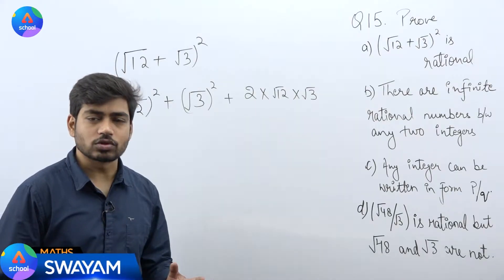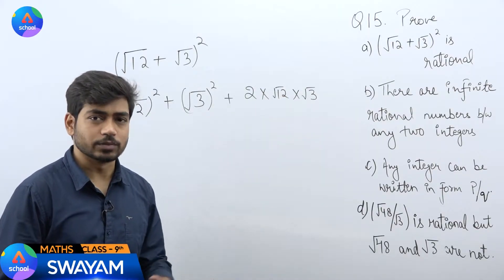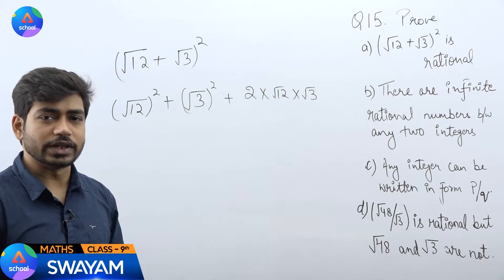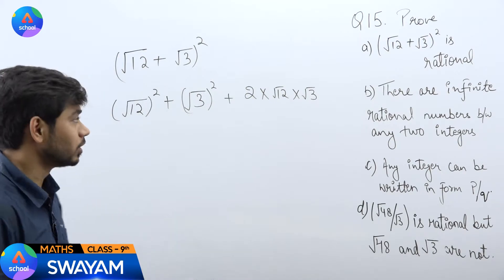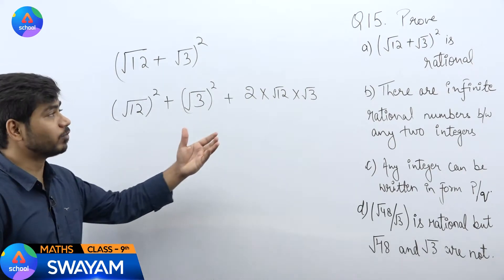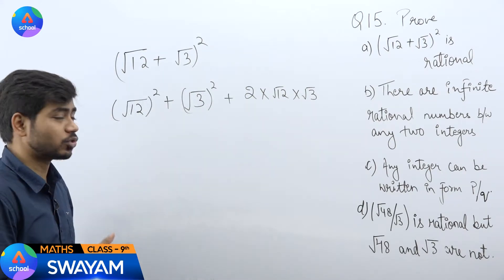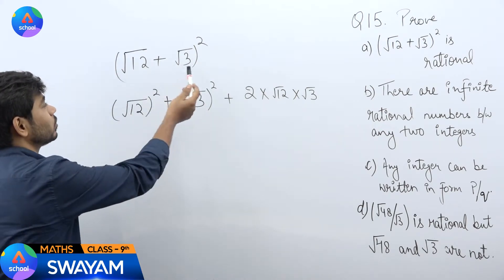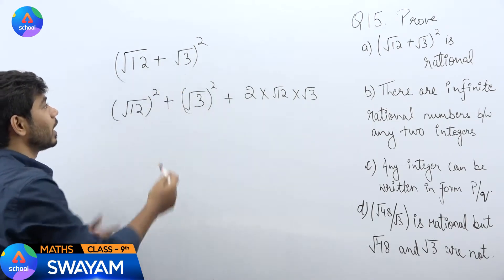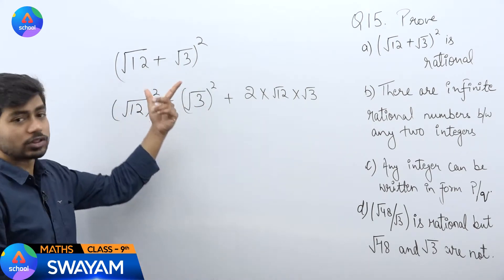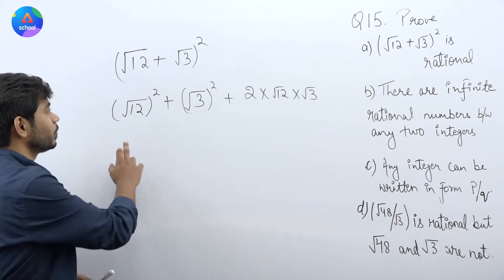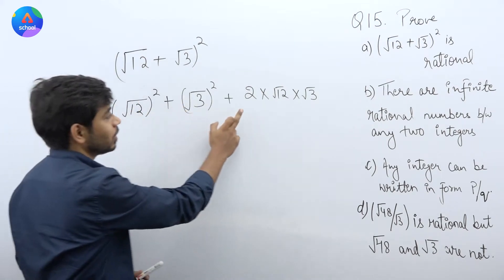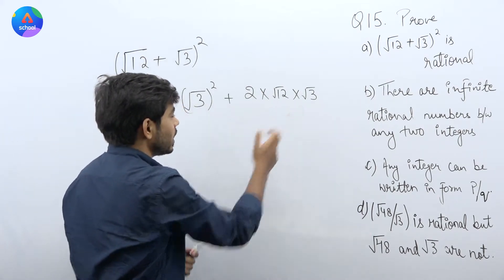Prove the following questions, question number 15: (√12 + √3)² is rational. To prove this, we expand (√12 + √3)² using the (A + B)² format, which gives A² + B² + 2AB.